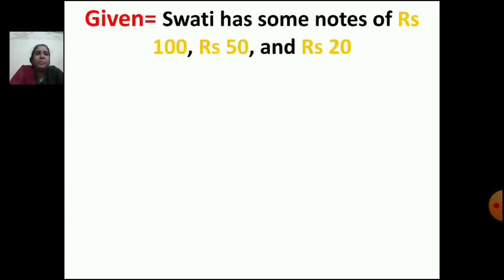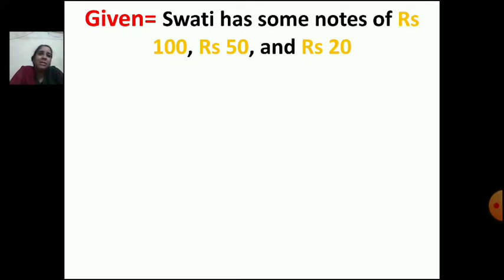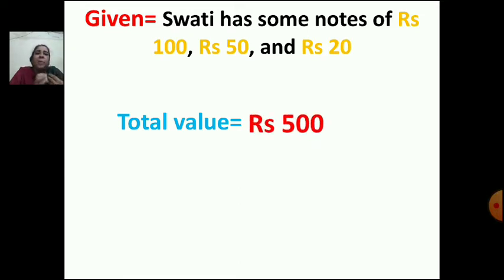What is given? Swati has some notes of rupees 100, rupees 50 and rupees 20. It means Swati is having some notes, but how many we don't know. She is having some notes of rupees 100, rupees 50 and rupees 20. And the total value of these notes is rupees 500.